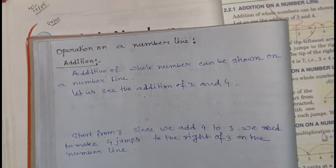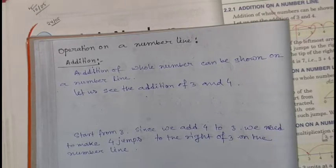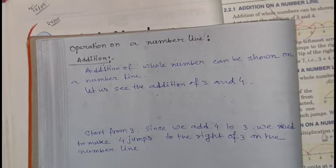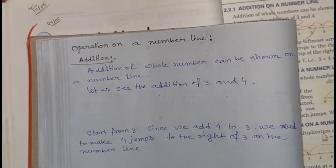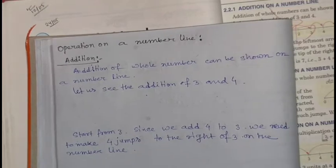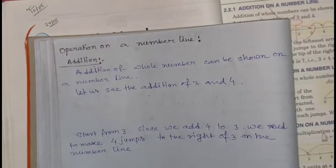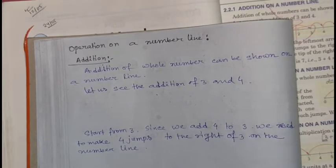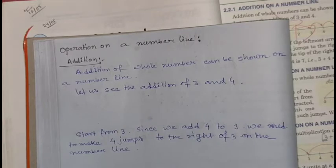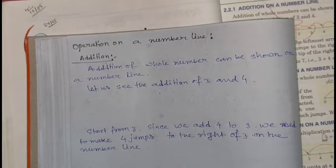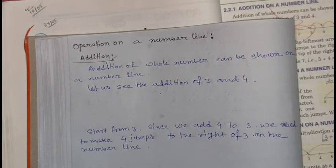Now we will learn about operations on a number line. The operations are addition, subtraction, multiplication, and division. First, we will learn about addition on a number line. Addition of whole numbers can be shown on a number line. Let us see the addition of 3 and 4 on a number line.